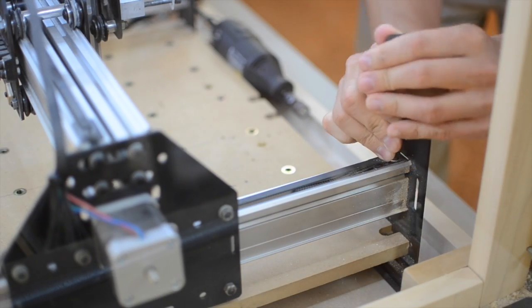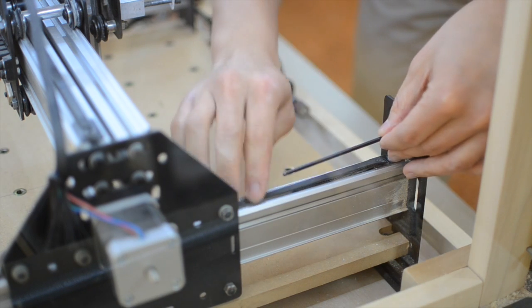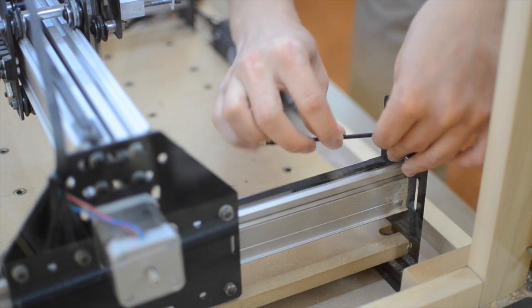Unlike the belts on the Shapeoko 2, which are stretched by directly applying force to the belt anchors, the Shapeoko 3 makes use of gravity to conveniently and consistently tension the X and Y axis belts.